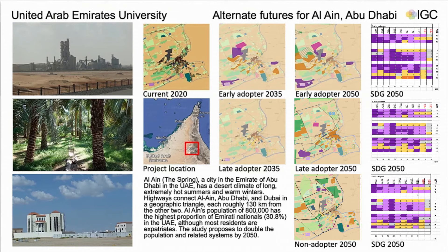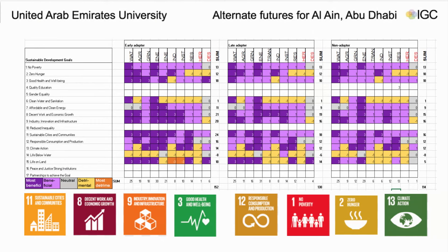In the late adopter design, innovations start in 2035, resulting by 2050. The growth here is different — it was separate, not around the previous center, and away from the center. In the non-adopter design, the growth was random, with some development close to the center and others away from it.